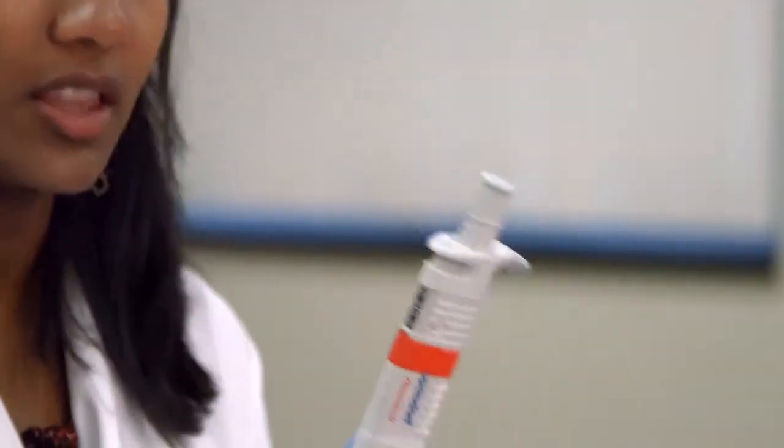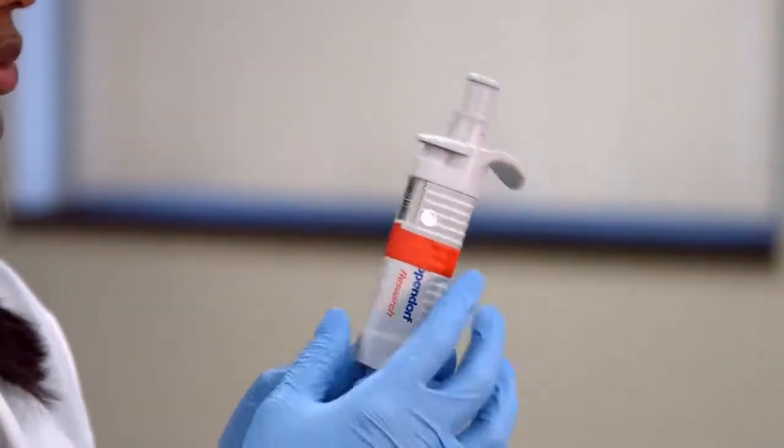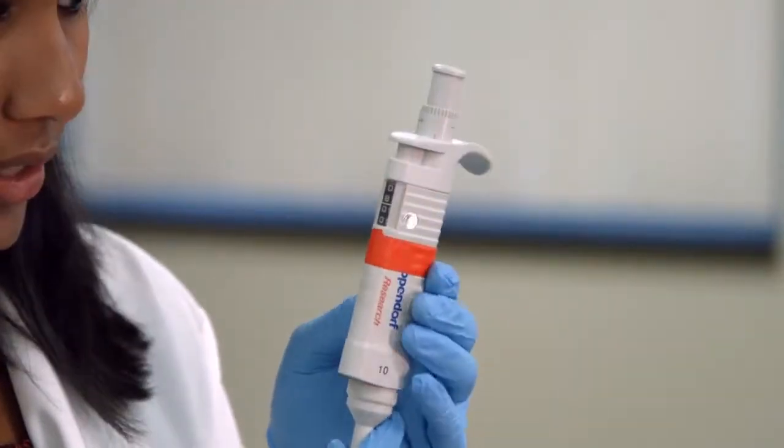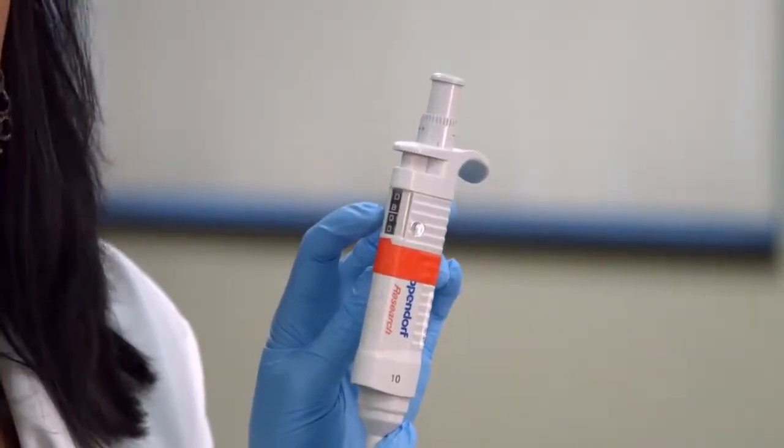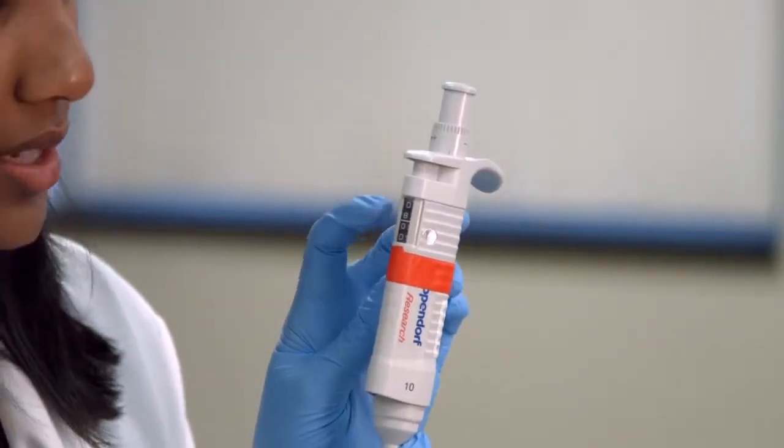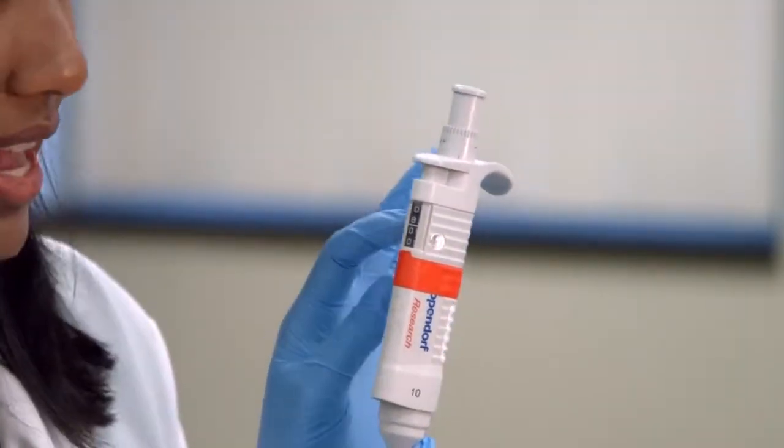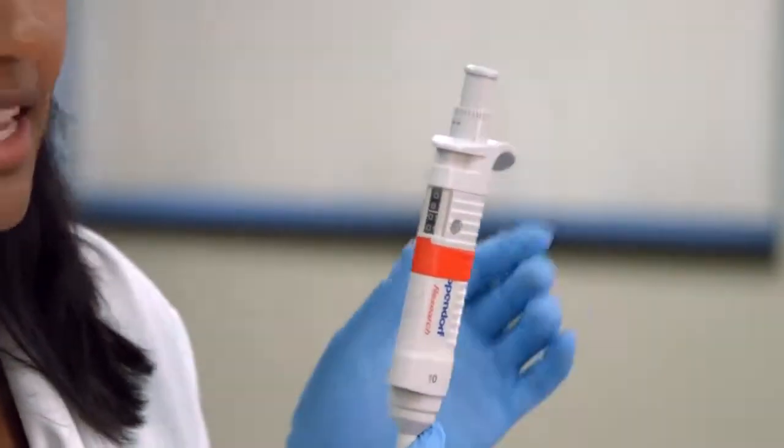And then on here, on the P10, this is what 8 microliters looks like. So yes, again, it looks like it's 800, but here the decimal point goes up to 2. So this is 8.00. Again, that line is indicating the decimal point.